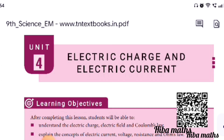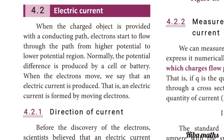The next topic is electric current. When a charged object is provided with a conducting path, electrons start to flow through the path from higher potential to lower potential region. The potential difference is produced by a cell or battery. When the electrons move, we say that an electric current is produced — electric current is formed by moving electrons.